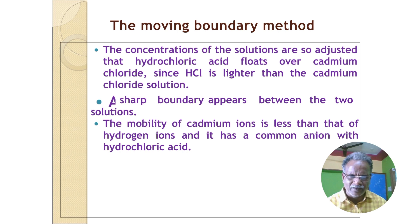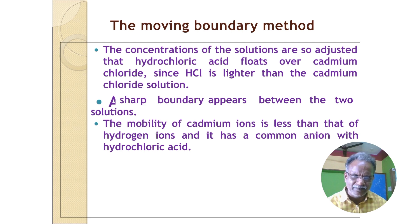The mobility of cadmium ions is less than that of hydrogen ions. It has a common ion with hydrochloric acid. The same ion present in both compounds is said to be the common ion. In HCl, there is Cl⁻. In cadmium chloride also, there is Cl⁻. So we can say that there is a common ion.